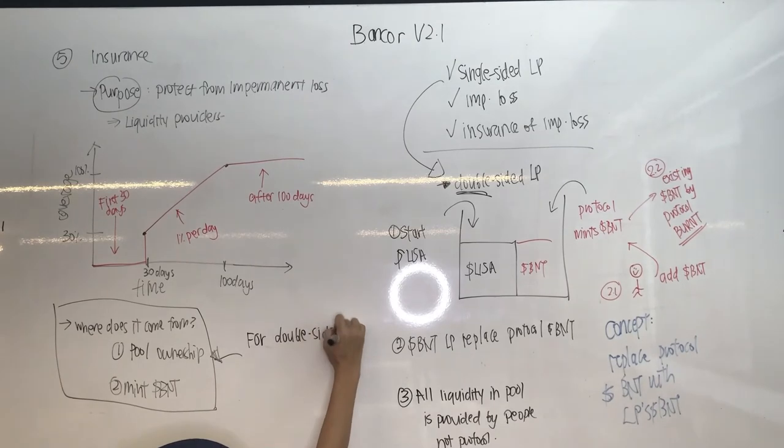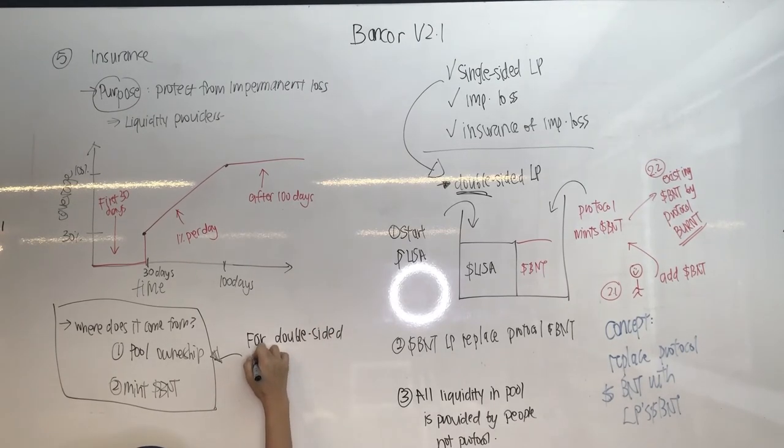But for double-sided, remember, for double-sided, if let's say there's no pool ownership by the protocol at all, then you automatically mint BNT tokens if there is impermanent loss over there.